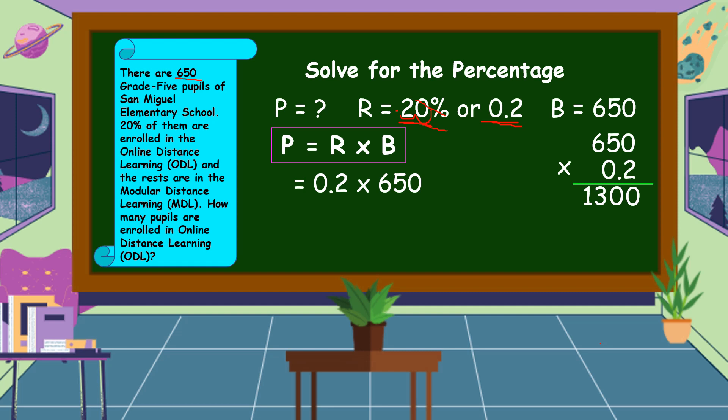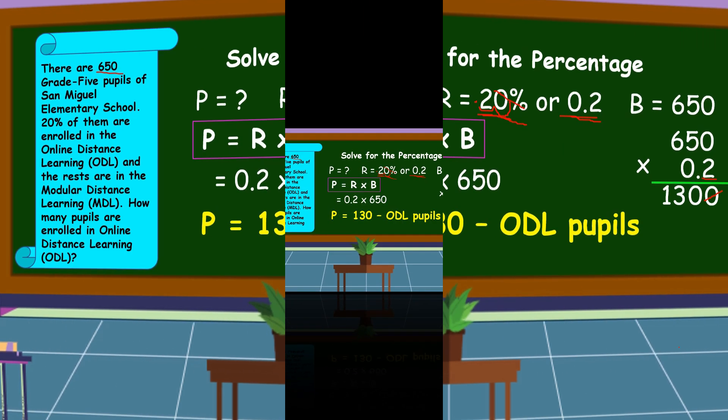Then we're going to count the decimal places in our factors. We have only one decimal place, so we can omit one zero. Therefore, the percentage is equal to 130. This is the number of ODL pupils.